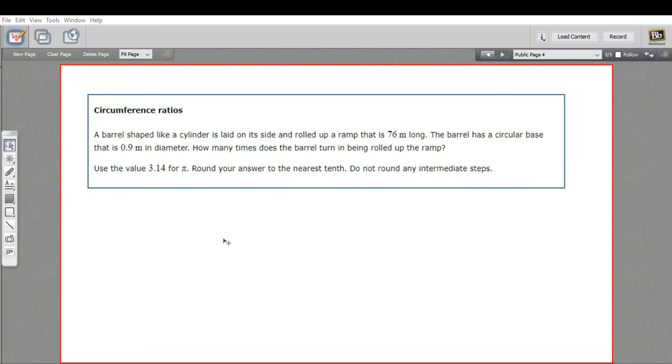In this problem, we've got a bit of a tricky word problem that has to do with circumference. It says a barrel shaped like a cylinder is laid on its side and rolled up a ramp that is 76 meters long. The barrel has a circular base that is 0.9 meters in diameter. How many times does the barrel turn being rolled up the ramp? They're telling us to use 3.14 for pi and round to the nearest tenth and don't round along the way.